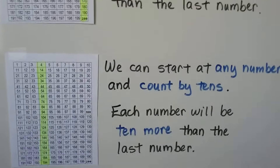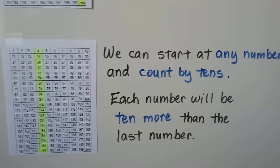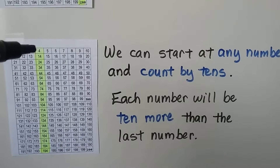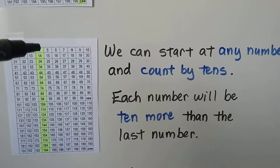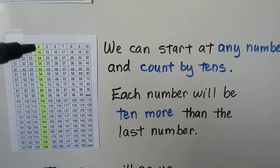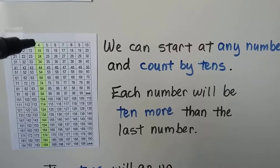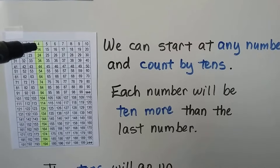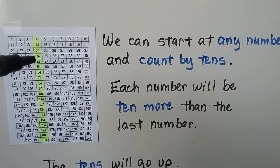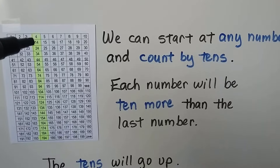We could start at any number and count by tens. We could start at four. All the ones place will stay a four, and the tens place will go up by ten. Four, 14, 24, 34, 44. See how the tens are going up?